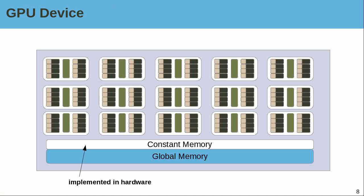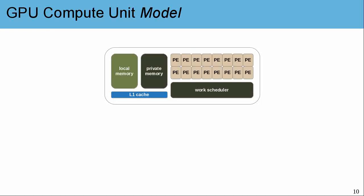The first thing to note about a GPU is that the constant memory space is actually implemented in hardware. The global memory space is also implemented in hardware. Even though we have a model of these things, on a GPU they physically exist — there is a physical global memory on the card and a physical constant memory on the card. So let's go ahead and descend into the compute unit.